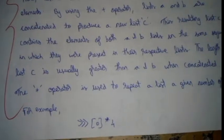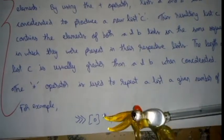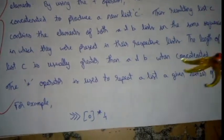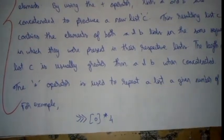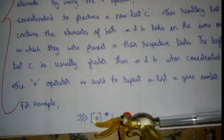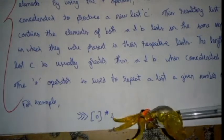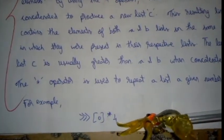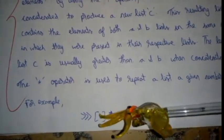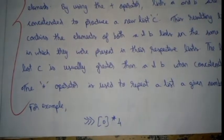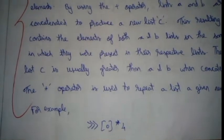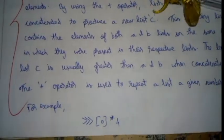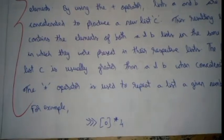The star operator is used to repeat a list a given number of times. For example, if zero is there in the list and I'm going to use a star operator with the value of four, this zero will be repeated four times. This is the multiplication or repeating operation. You can only perform two operations in lists: addition and multiplication.